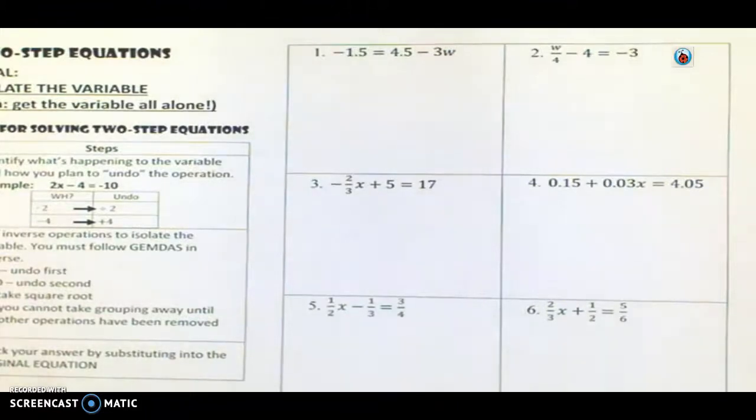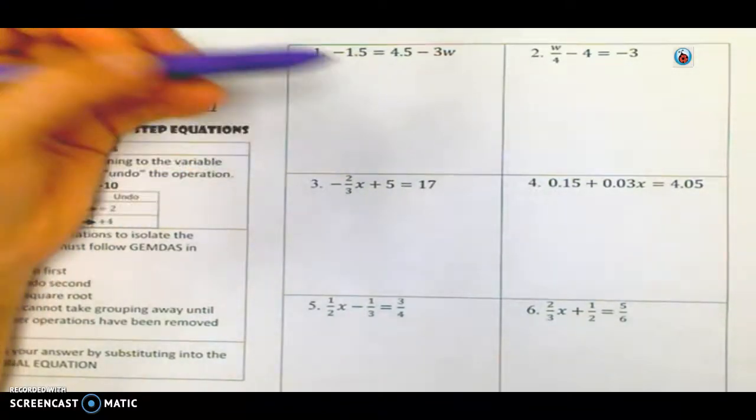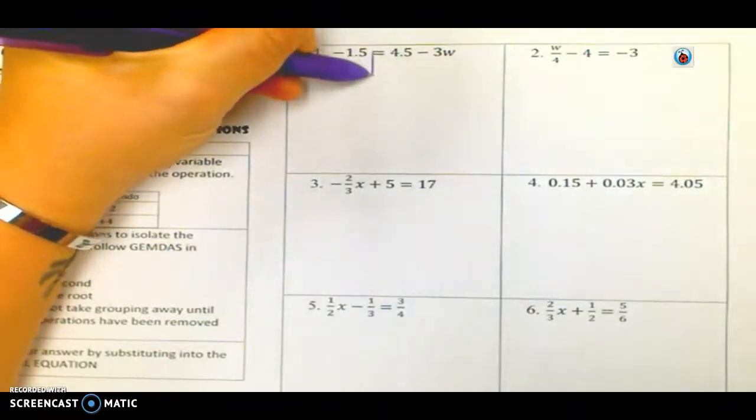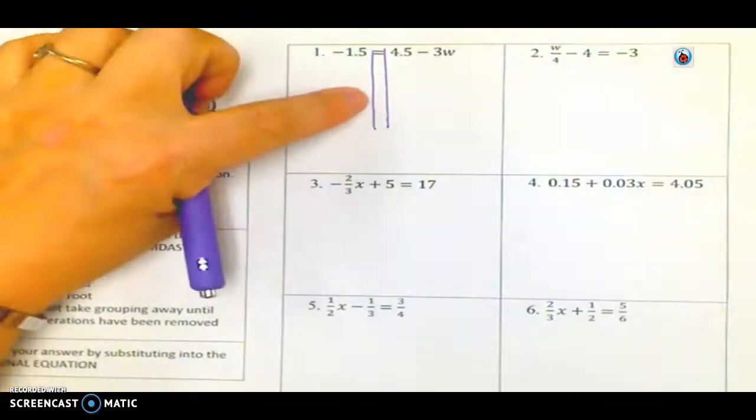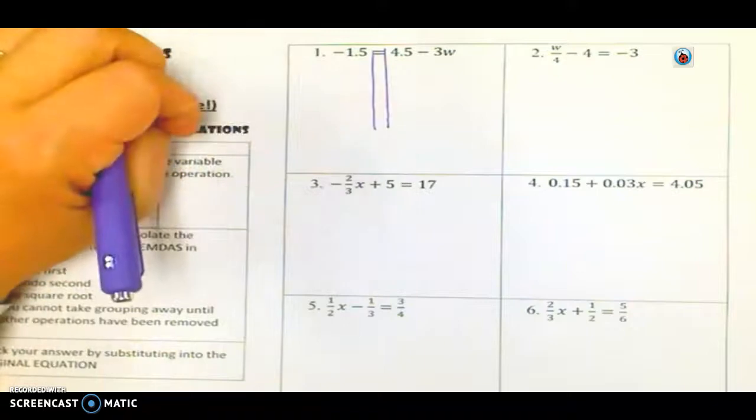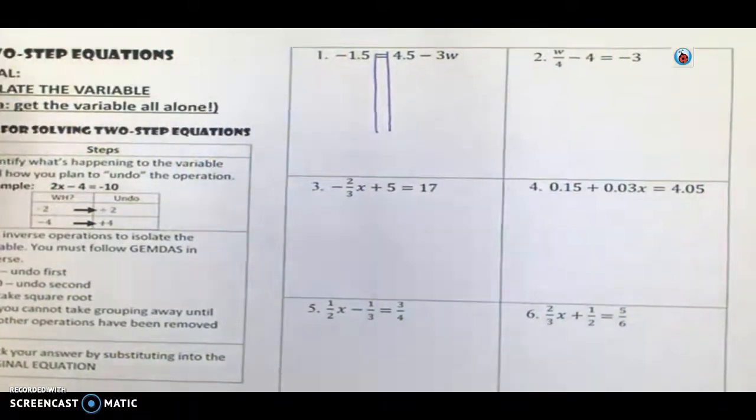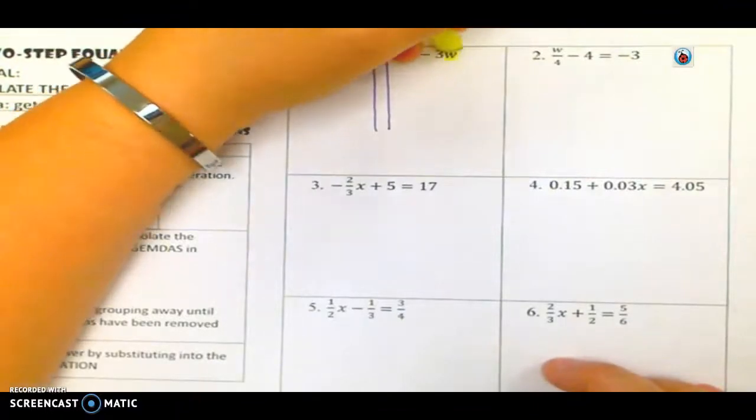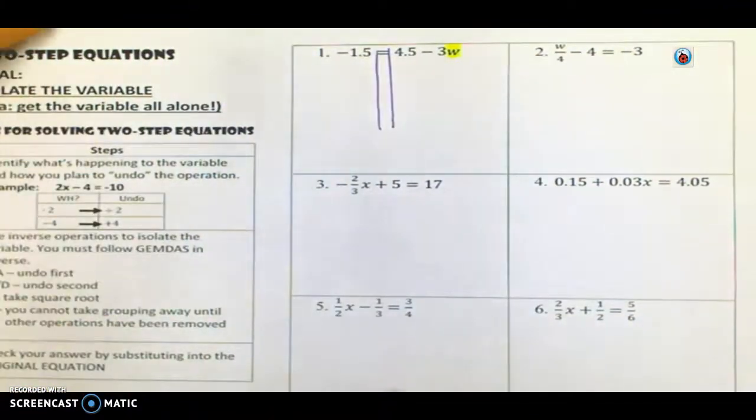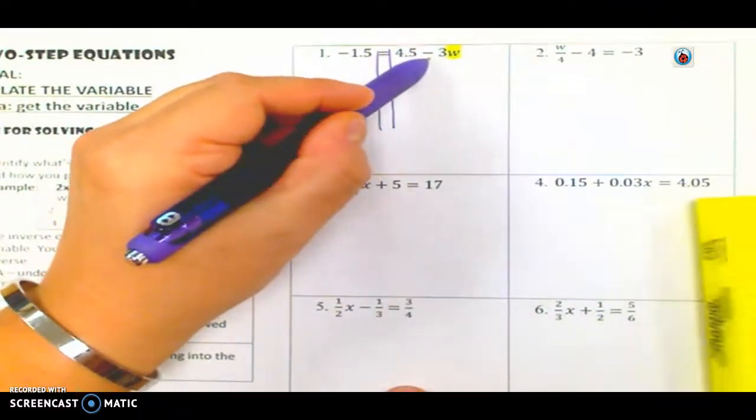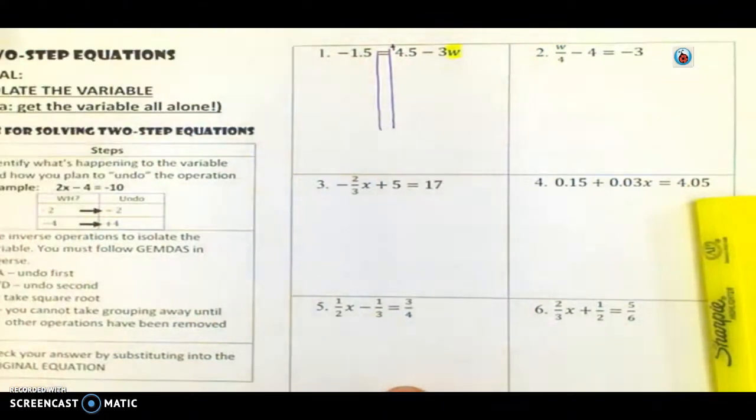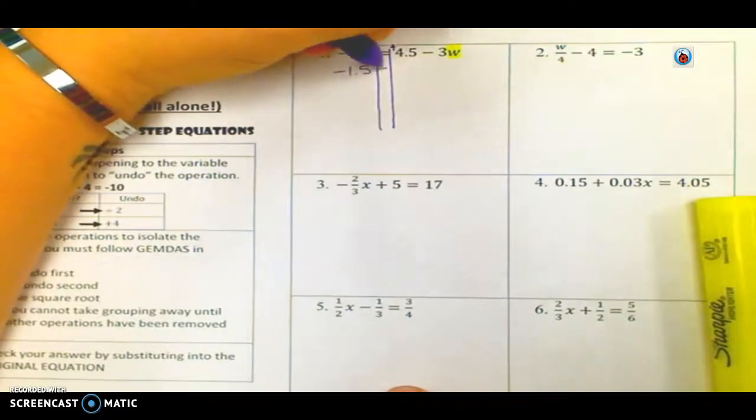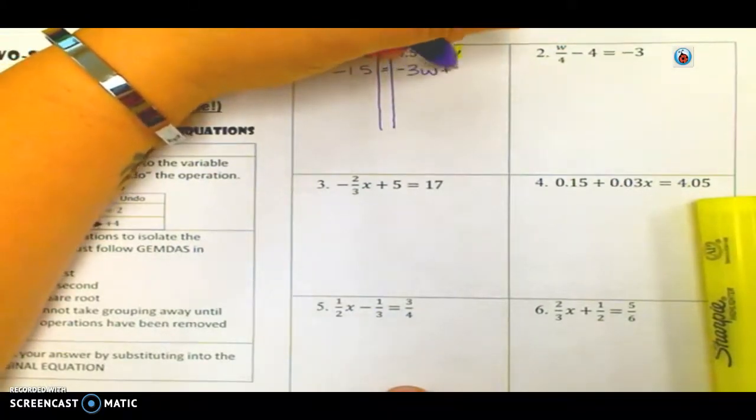But I am going to show you how I would like to show your work. So here, whenever I approach this, I like to kind of keep my two sides of my equation. So I draw a little set of railroad tracks. Some people have called it a river, but basically if you're going to cross over to the other side, you have to be doing the opposite operation. So I like to pay attention to where is my variable. Variable's right there. So be careful because I can see here that I'm multiplying by a negative three, and then this is a positive 4.5.